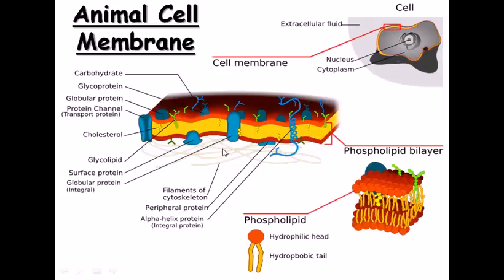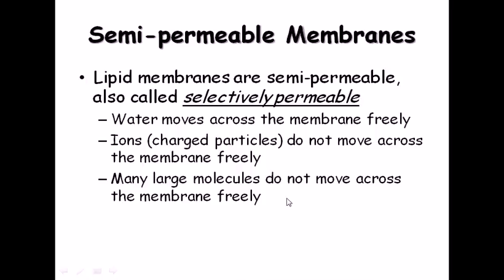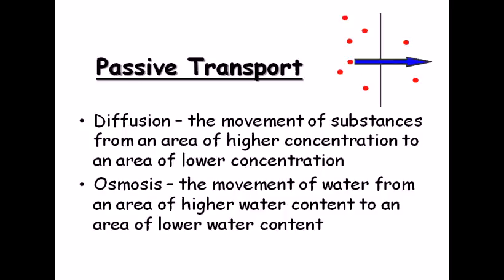Lipid membranes are semi-permeable, also called selectively permeable. These membranes do not allow all types of molecules to pass freely — they allow particular molecules to diffuse across while blocking others. Water moves across the membrane freely, but ions and charged particles do not. Many large molecules also cannot move across freely. For ions and large molecules to cross, there are different protein channels present in the cell membrane through which they can pass.